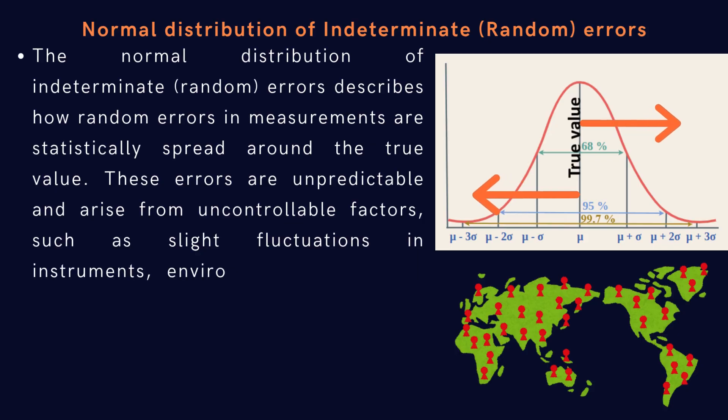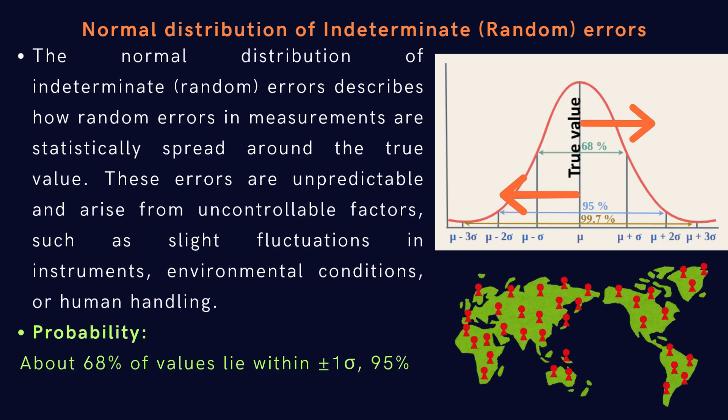Probability: about 68% of values lie within ±1 sigma, where sigma is standard deviation, 95% within ±2 sigma, and 99.7% within ±3 sigma.